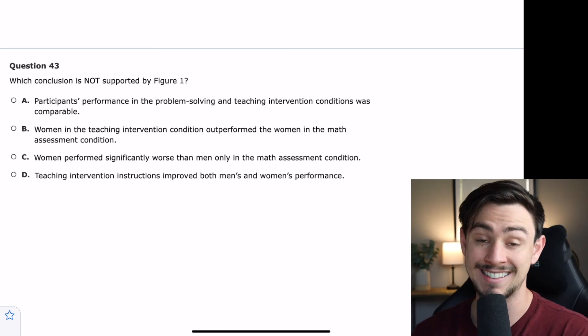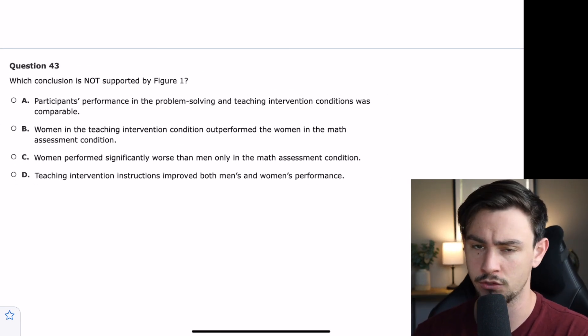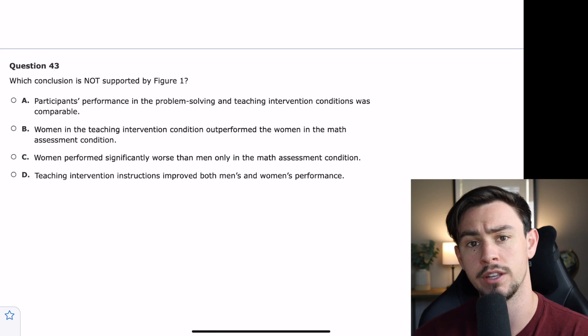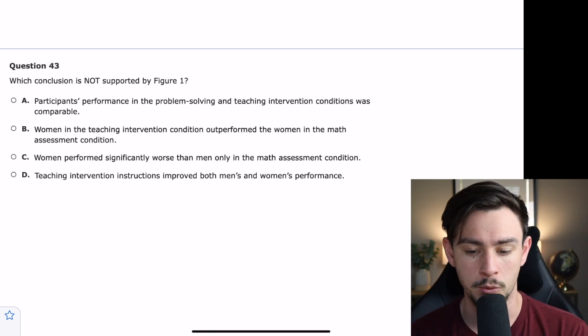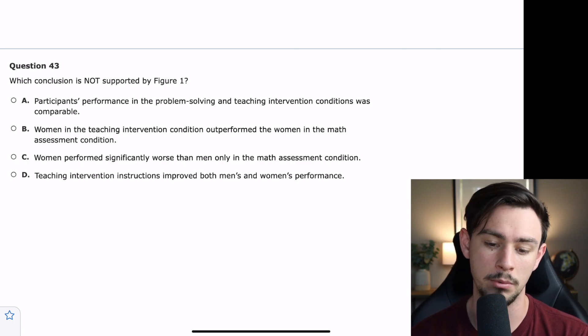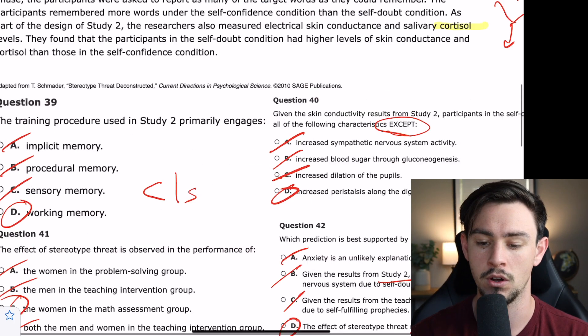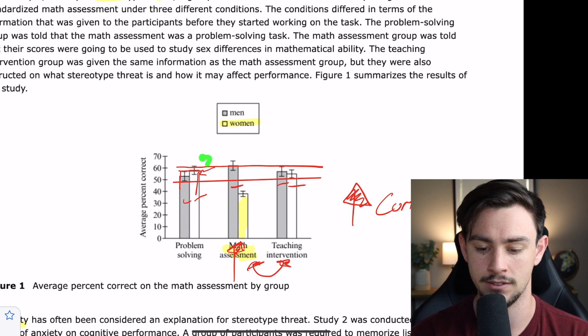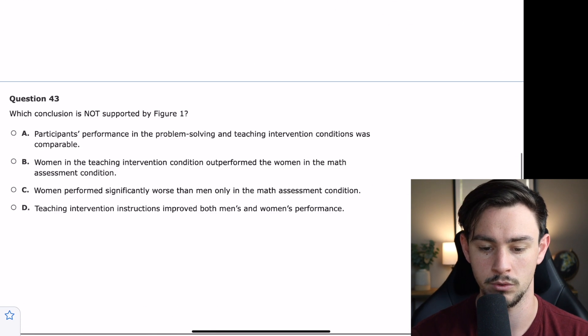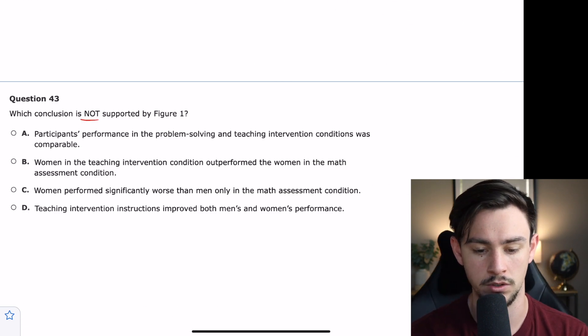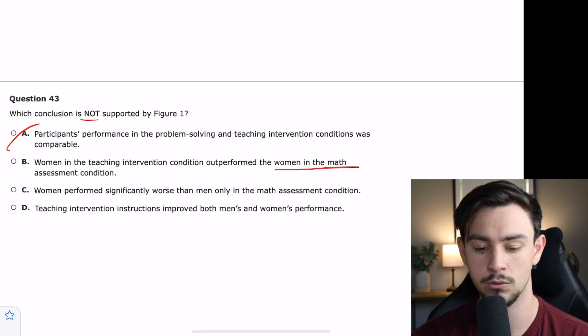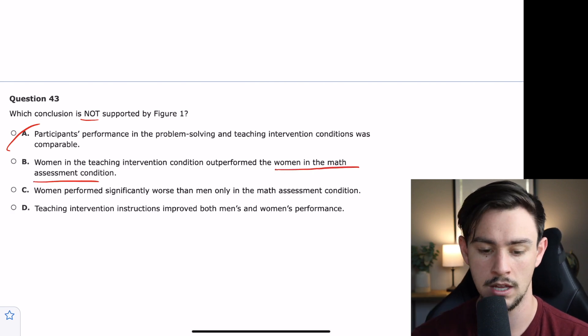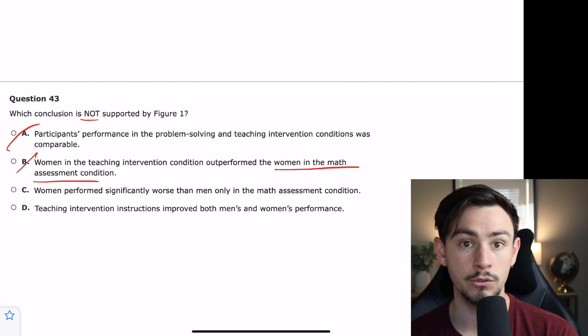And number 43 says, which conclusion is not supported by figure one? We've already kind of looked at figure one, so I'm going to go ahead and read the answer choices before we scroll back to it. A says, participants' performance in the problem-solving and teaching intervention conditions was comparable. Well, remember, we talked about how those were exactly the same. So, we're looking for one of the ones false. What's false about figure one? That is not false. B says, women in the teaching intervention condition outperformed the women in the math assessment condition. Remember, this was the only group that actually performed worse. So, that is a true statement as well, so we can cross it out.